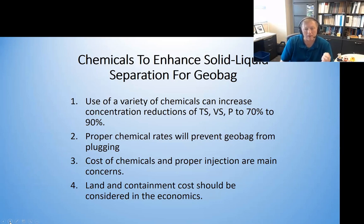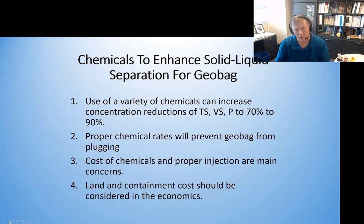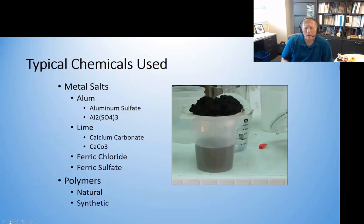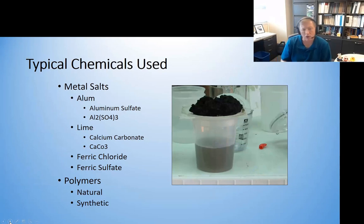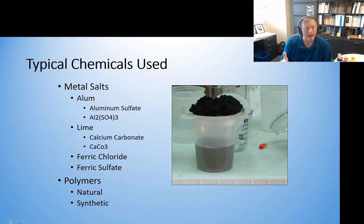You need to make sure the chemicals are injected properly, used in the right manner and in the right order so you can get the best separation possible. Also consider how much land is going to be needed and where are the liquids going to run off — are they going back into the holding pond or somewhere else? Some examples of chemicals typically used for these systems: you have your metal salts such as alum, lime, and some iron products, and you also have polymers. Many times you're going to combine the polymers with the metal salts in tandem to get a better separation. You can see an example in this photo of what the separation actually looks like when using these various types of chemicals.